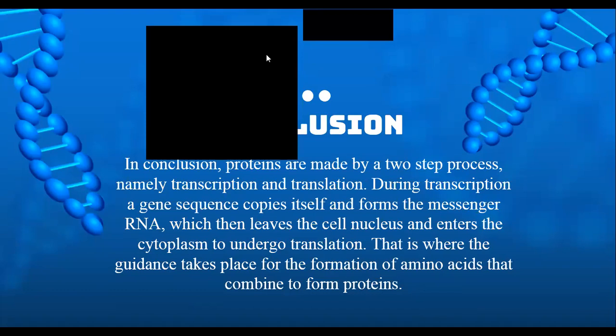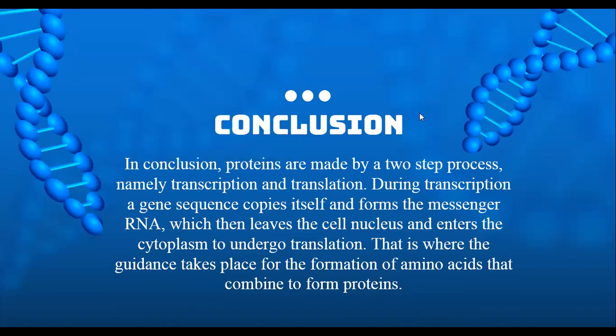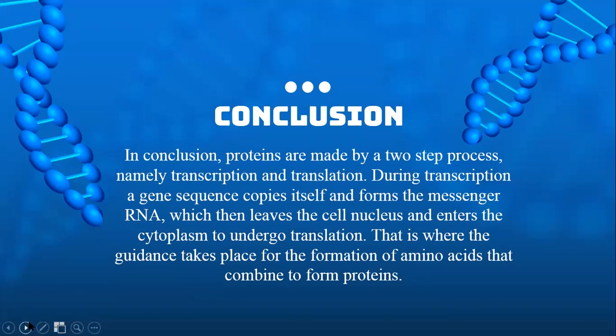In conclusion, proteins are made by a two-step process, namely transcription and translation. During transcription, a gene sequence copies itself and forms the messenger RNA, which then leaves the cell nucleus and enters the cytoplasm to undergo translation. That is where the guidance takes place for the formation of amino acids that combine to form proteins. This is the end of our presentation.